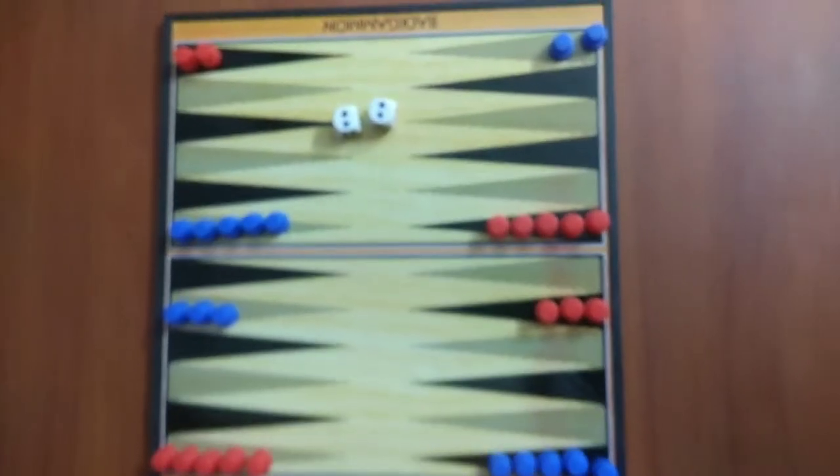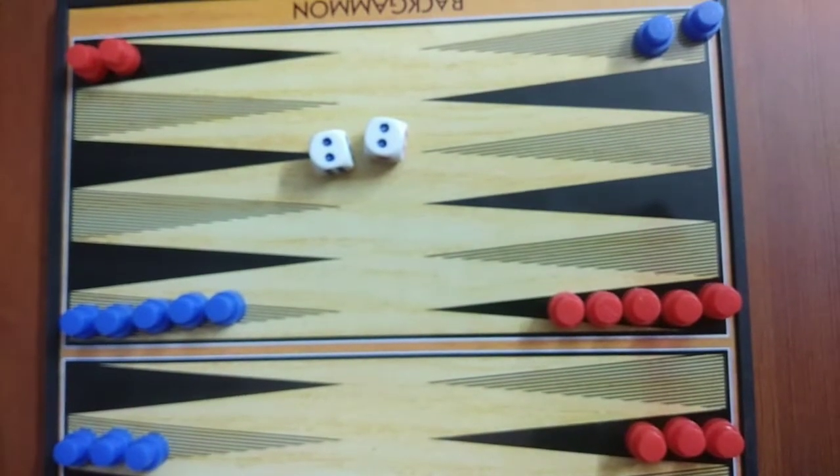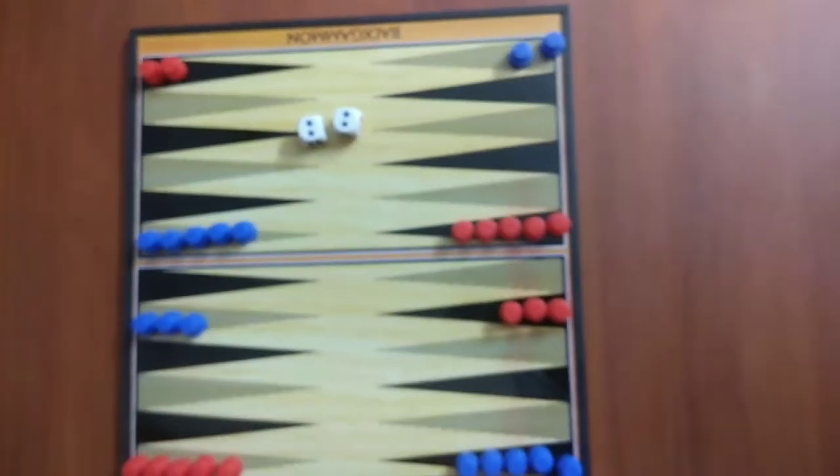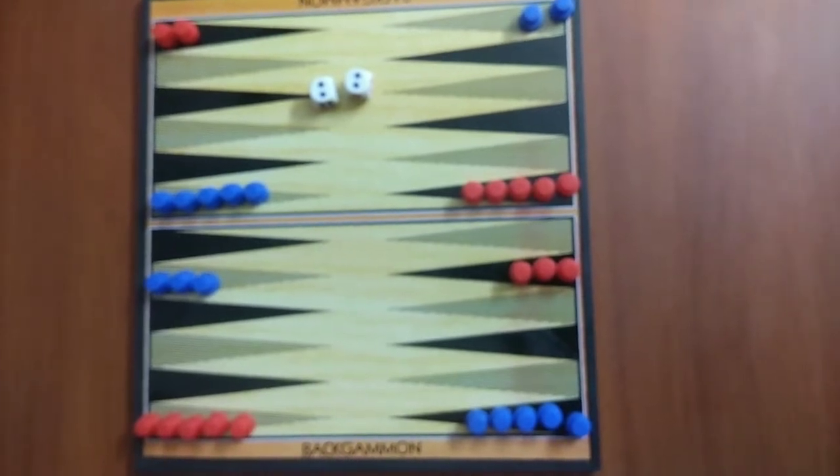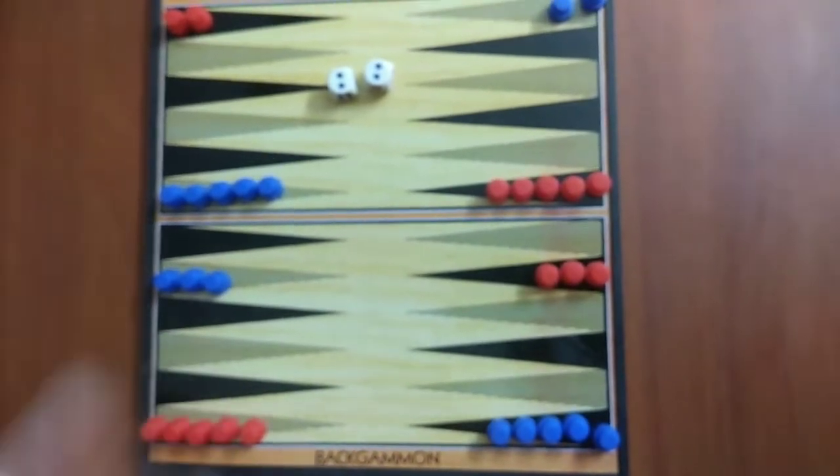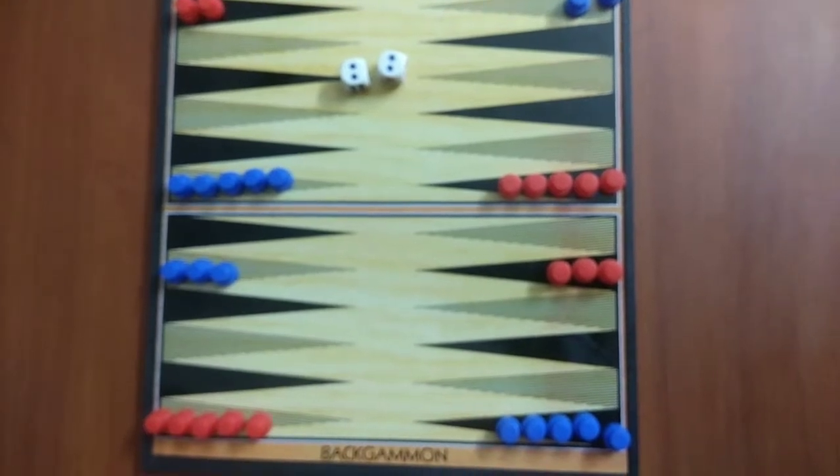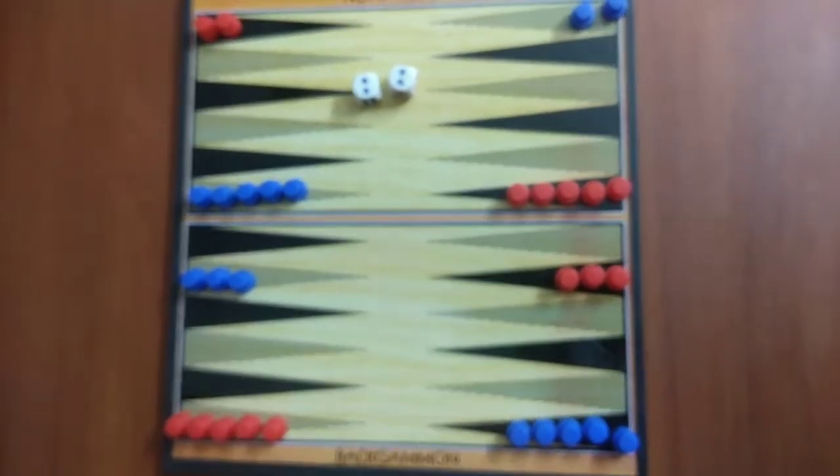Rolling of the same number allowed player to move 4 times. For example, if player got rolled 2 and 2, then he allowed to move total 8 points.